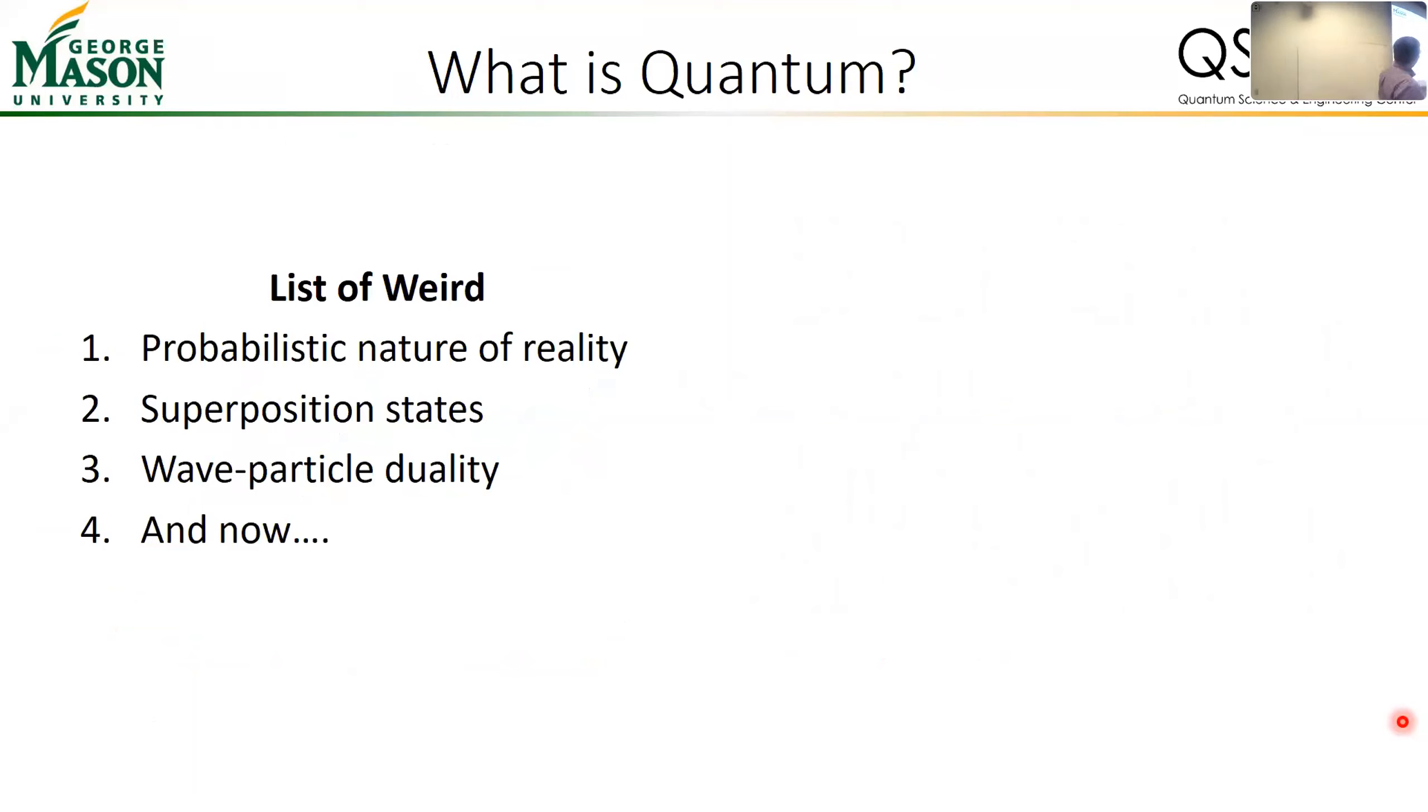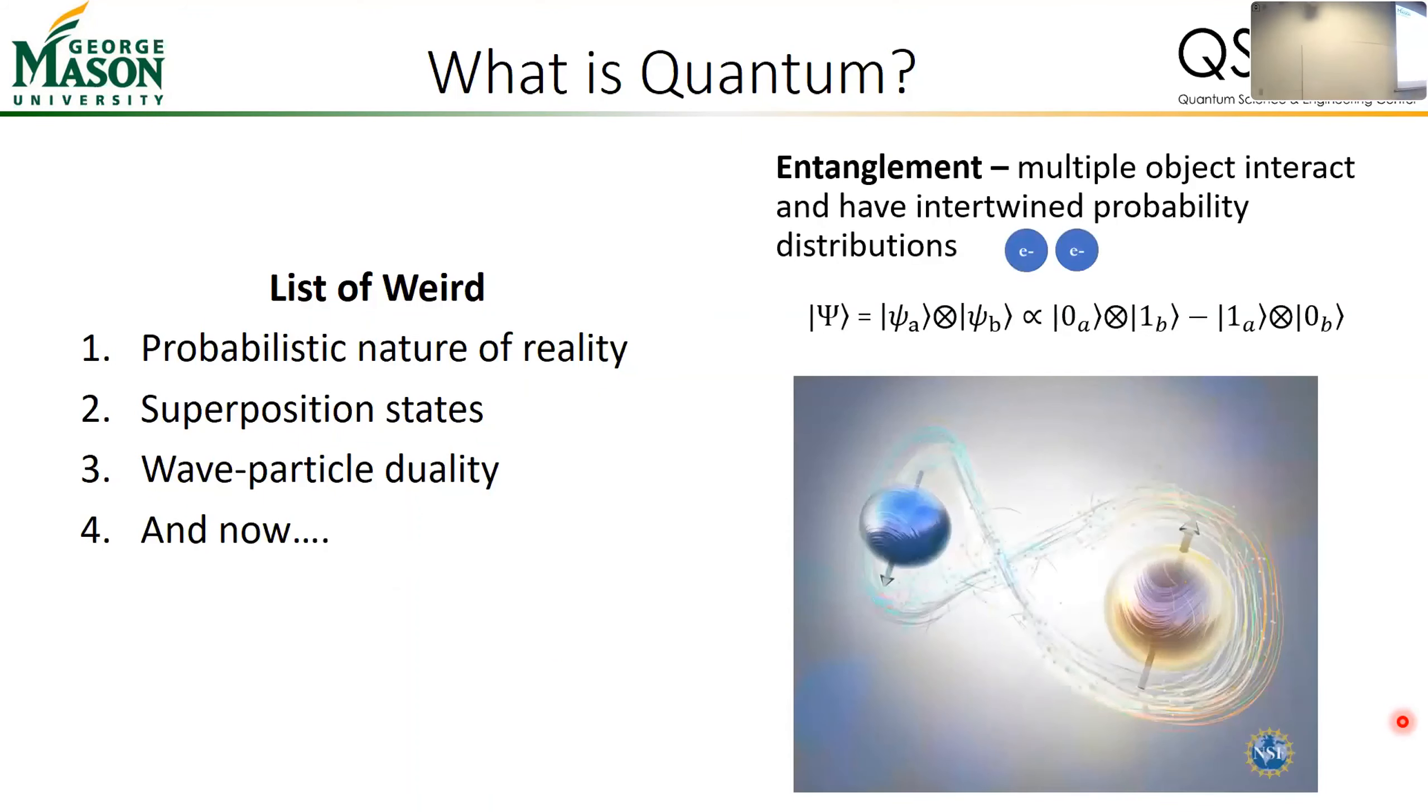There is something called quantum entanglement, which is a very strange thing. Some of you may have seen the Marvels trailer that came out the other night. Kamala Khan and the other characters, they have a thing going on where their powers are entangled. So they use their powers and they swap positions. It's not quantum entanglement, but it kind of is showing you something similar in idea.